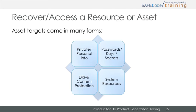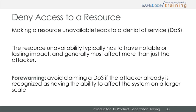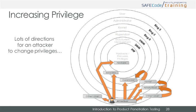Another goal of attackers is to gain access to a resource or asset. Resources and assets come in many flavors, including private user information, passwords and other secrets, protected content, and critical system resources. While an attacker may look to gain control of a resource or asset, they also may look to deny others access to a resource. Making a resource unavailable leads to what's called a denial of service, or DOS vulnerability. To truly be effective, a DOS attack needs to have a notable or lasting impact and affect more than just the attacker.